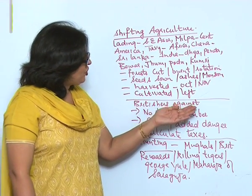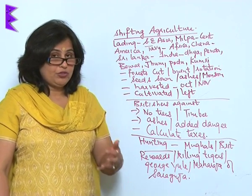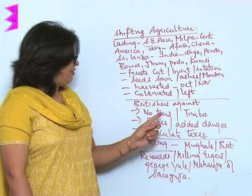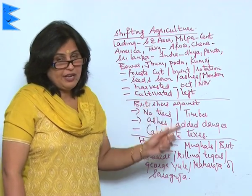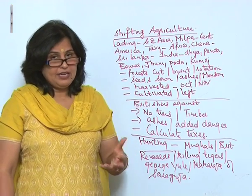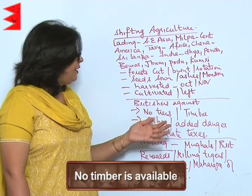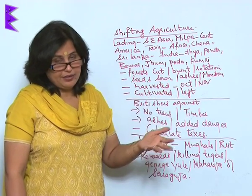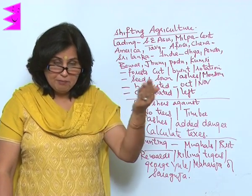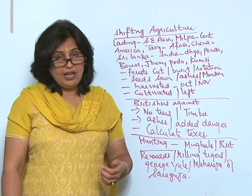The British were dead against shifting cultivation. One reason was that when shifting agriculture is practiced, you cannot have strong, sturdy trees, meaning no timber is available. Additionally, because the land is burnt, the ashes pose a danger to the surrounding timber, as the area might catch fire.